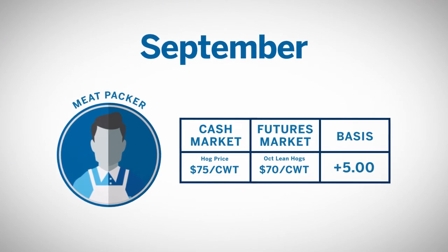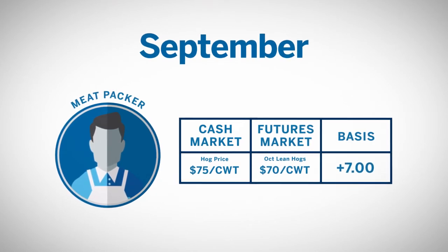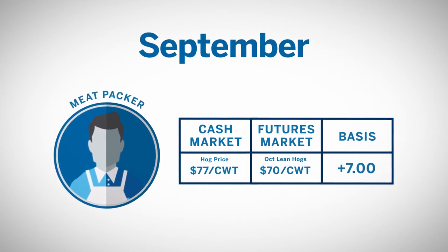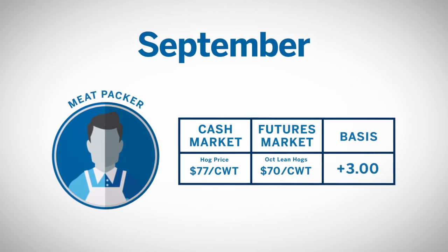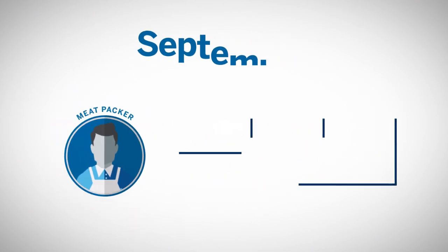But what if the basis strengthens — in this case becomes more positive — and instead of the expected $5 over, it actually goes $7 over in September? Then the net purchase price increases to $77 per hundredweight, $70 plus $7. Conversely, if the basis weakens, moving from $5 over to $3 over, the net purchase price drops to $73 per hundredweight, $70 plus $3.